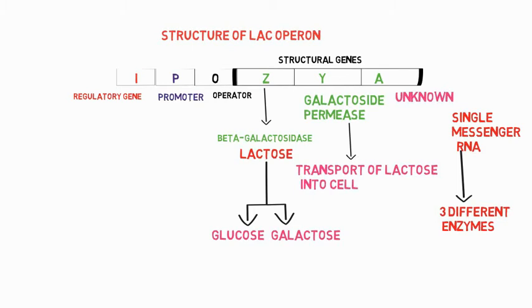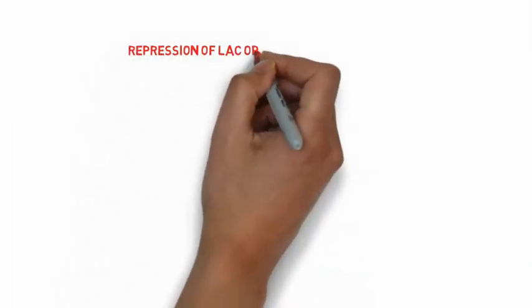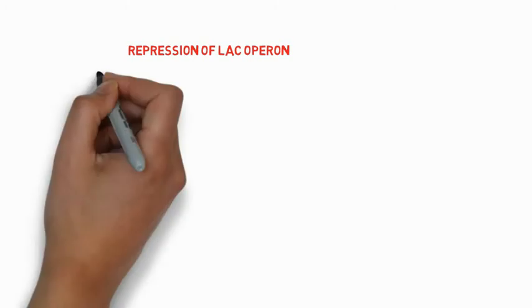From the mRNA to produce more than one protein, so it is known as polycistronic mRNA. Now the repression of lac operon.